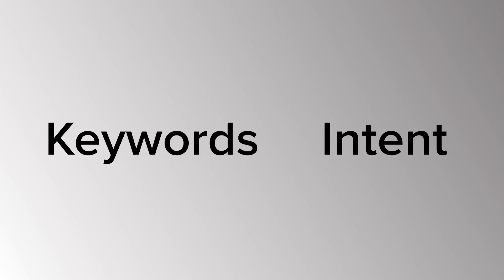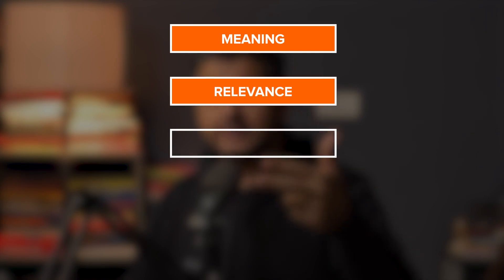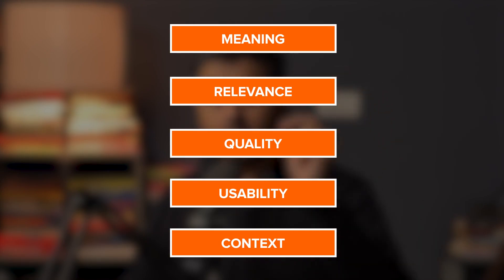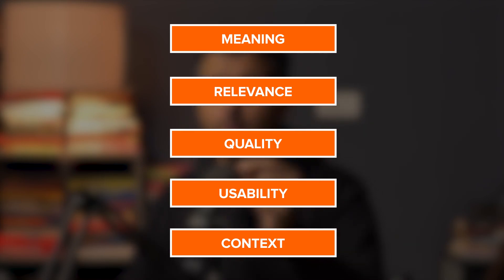There's another set of factors you must consider before your website can rank highest in the search results: quality and usability. Google's official resource on how search algorithms work lists five factors — meaning, relevance, quality, usability, and context. I've already covered meaning, relevance, and context. Now let's talk about quality and usability, as they also have a huge impact on the performance of your website.